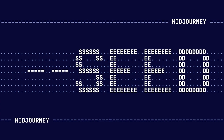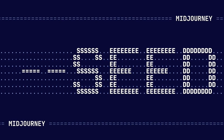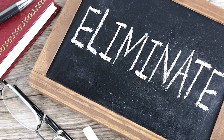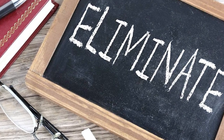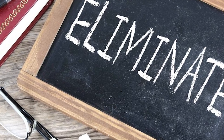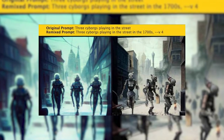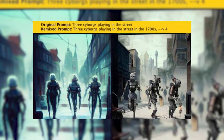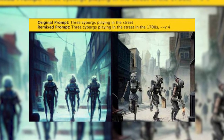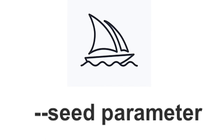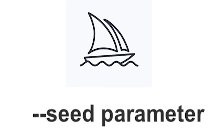Every generation will usually produce a slightly different variation of your prompt's concept, making it very difficult to maintain a specific composition. One way of solving this during the explorative phase of your prompts is to set a specific seed value. This will eliminate most of the randomness in your image generations and your variations will look a lot more similar. Once you've identified a variation that you really like, you can continue to build on top of it by using remix mode.